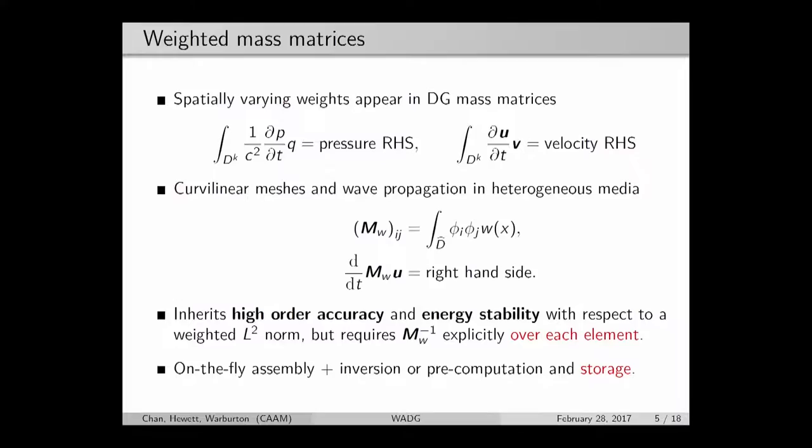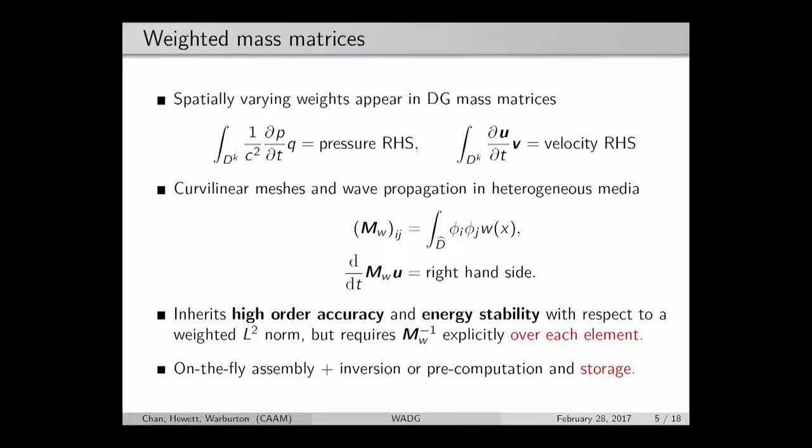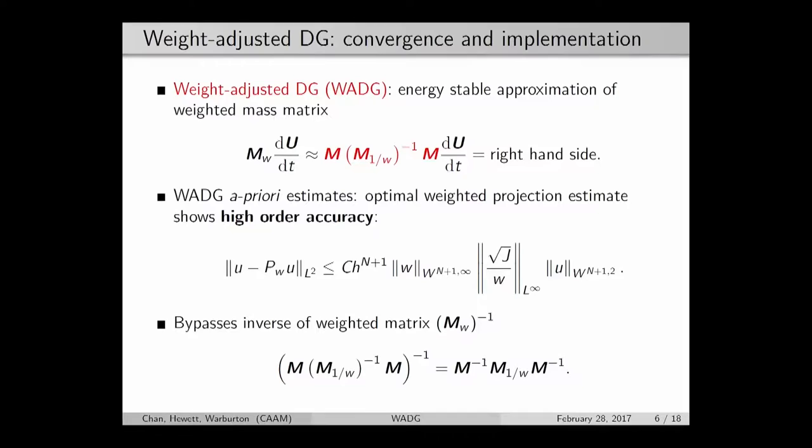Both options are not palatable. You can either assemble these on the fly and invert, which is expensive and hard to parallelize, or you can pre-compute and store, and if you use high order methods this storage is incredibly expensive. So our approach is simply to approximate and find an approximation which is cheap. We take our weighted mass matrix and replace it by this product of three different matrices.